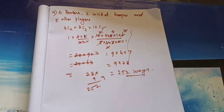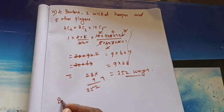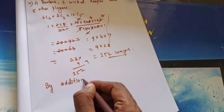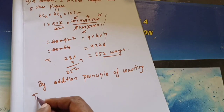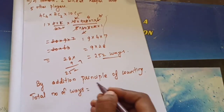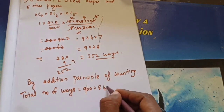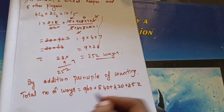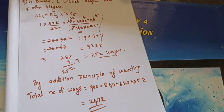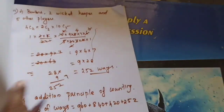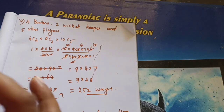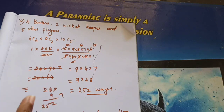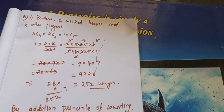We have now completed all 4 conditions: 3 bowlers + 1 wicket keeper, 3 bowlers + 2 wicket keepers, 4 bowlers + 1 wicket keeper, 4 bowlers + 2 wicket keepers. By the addition principle of counting, the total number of ways = 960 + 840 + 420 + 252 = 2472. This is the required answer. You need to split into 4 cases and add all the results.